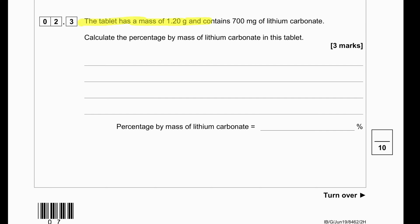The tablet has a mass of 1.2 grams and contains 700 milligrams of lithium carbonate. Calculate the percentage by mass of lithium carbonate in this tablet. First of all, we will convert the 1.2 grams into 1200 milligrams. Then we are going to divide 700 with the 1200 milligrams and then we will multiply it by 100. This will give us the percentage by mass of lithium, which is 58.3%.